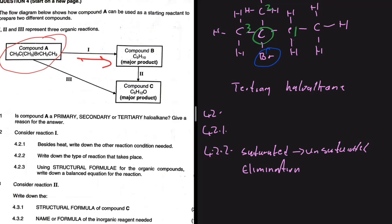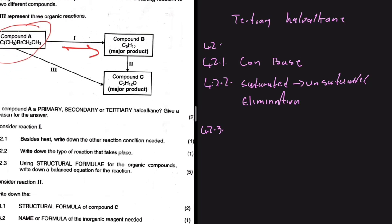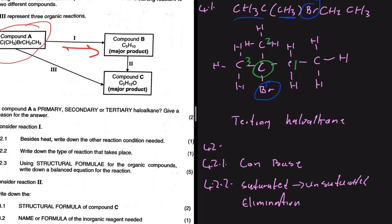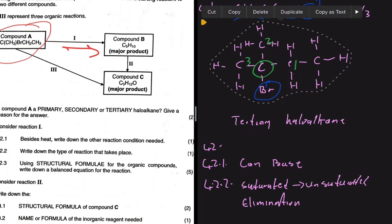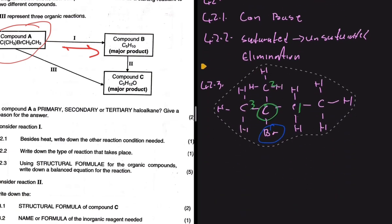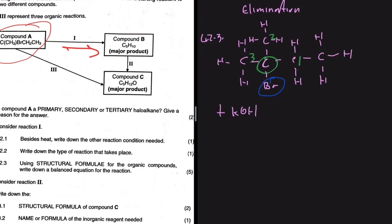Now for 4.2.1: besides heat, write down the other reaction condition needed. For an elimination reaction, the other condition needed is a concentrated base. For 4.2.3, using structural formulas for the organic compounds, let's write a balanced equation. We already have the structural formula for compound A, so we'll use that. Compound A plus a concentrated base — let's use KOH — so compound A plus KOH.